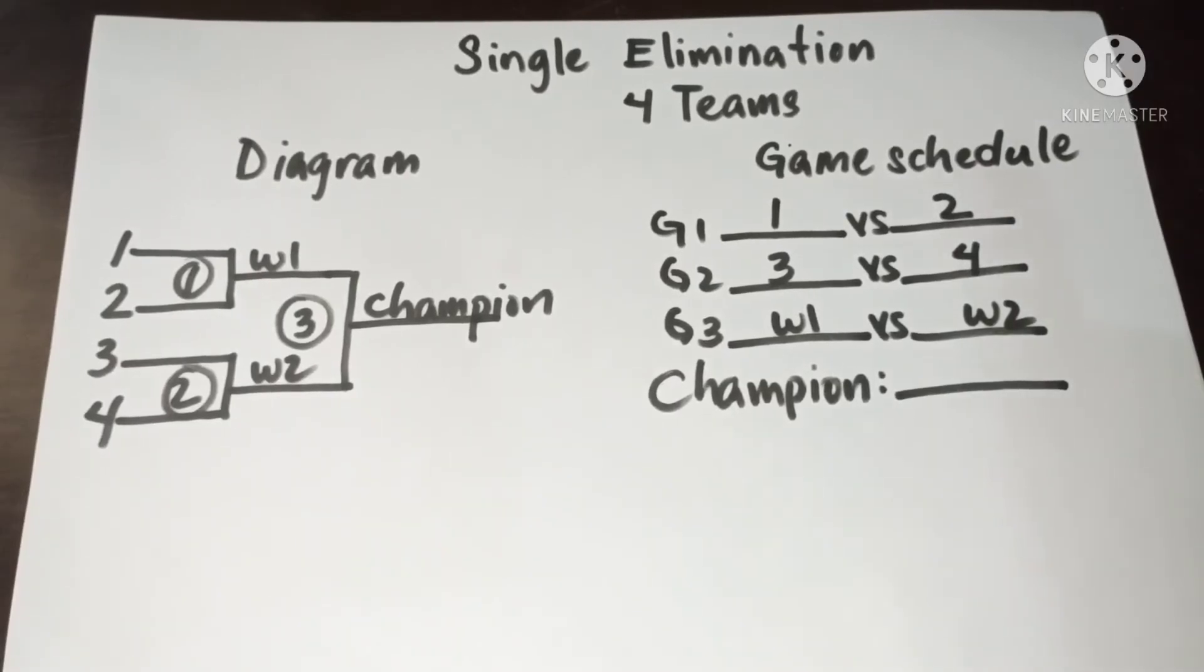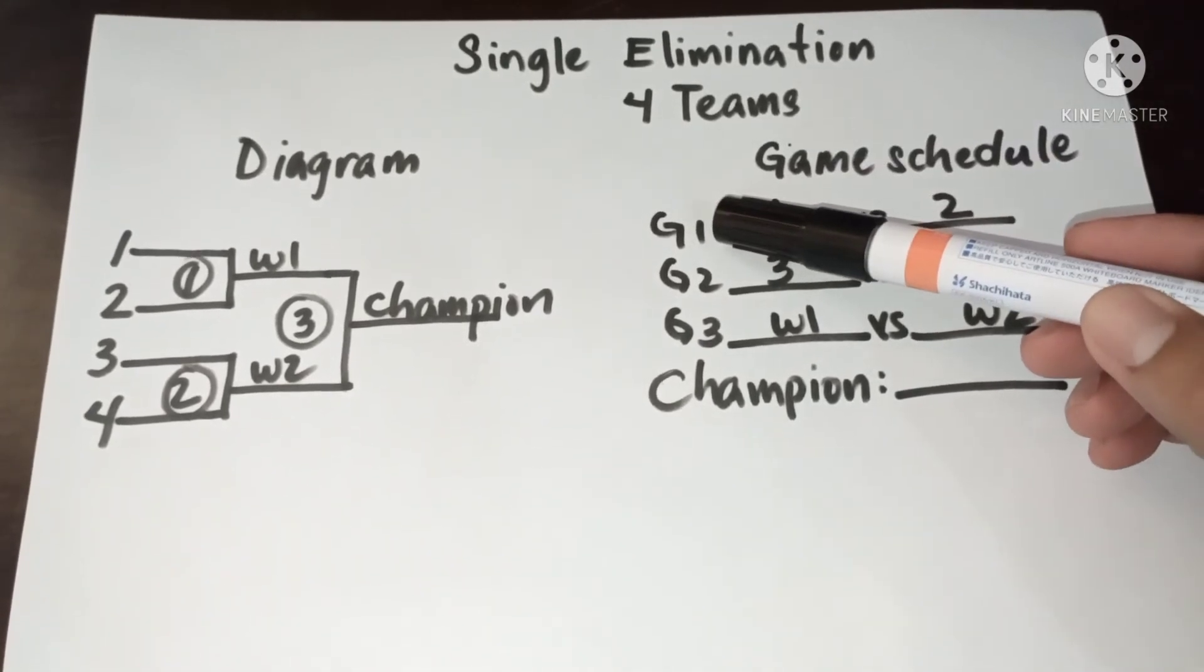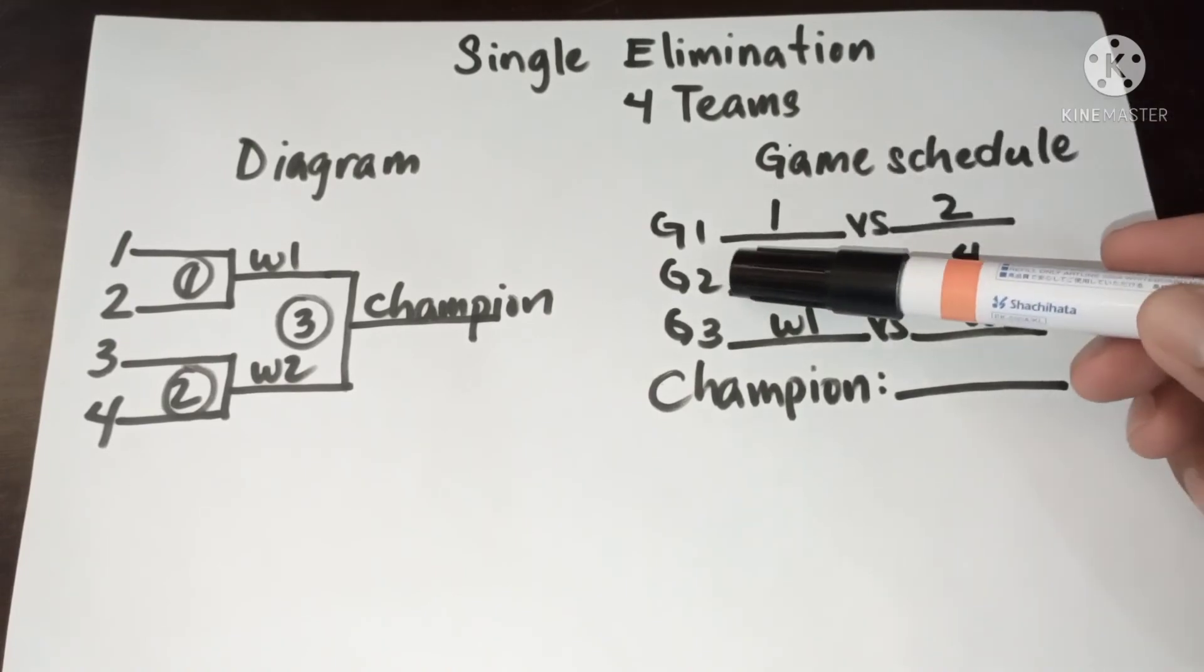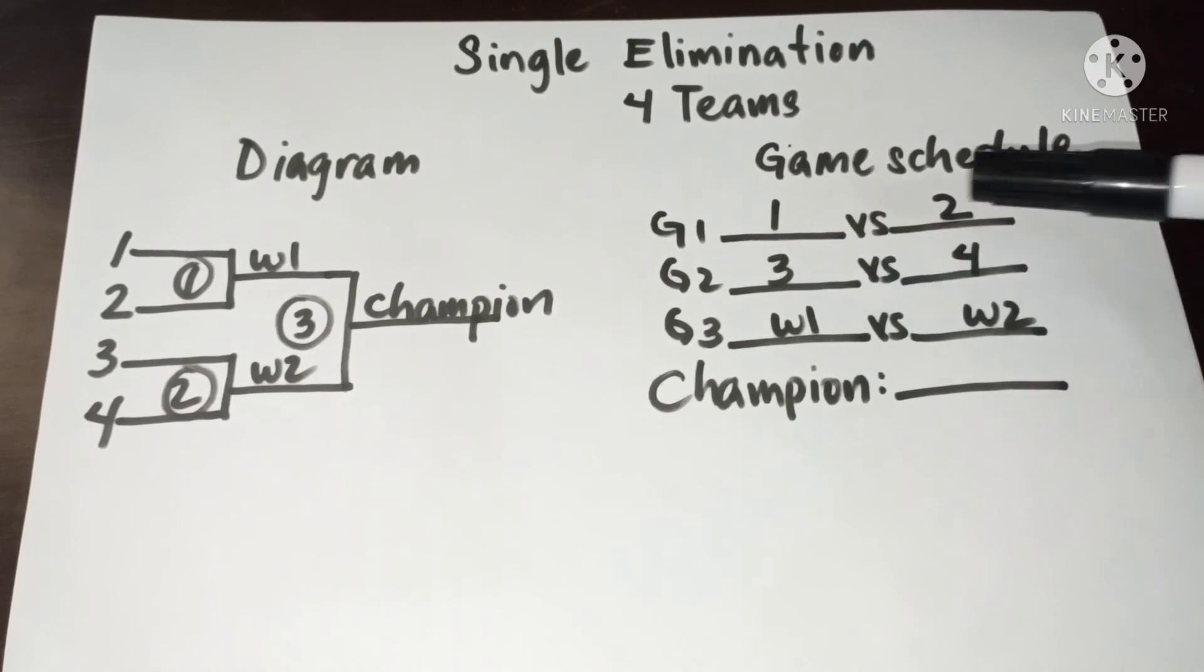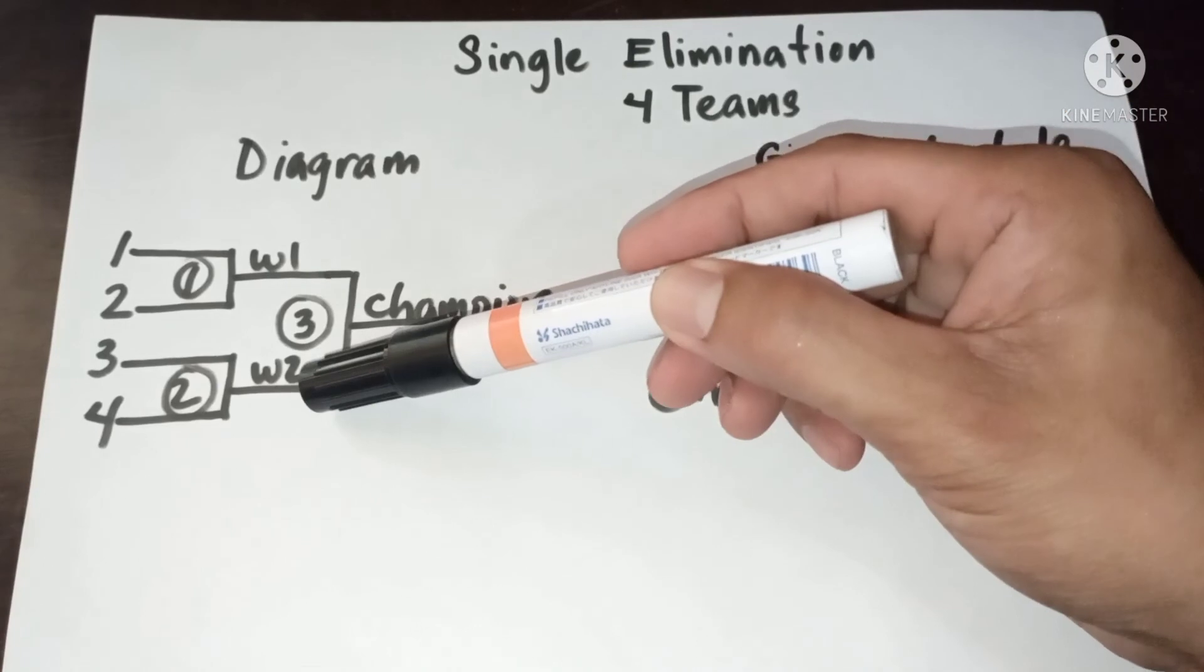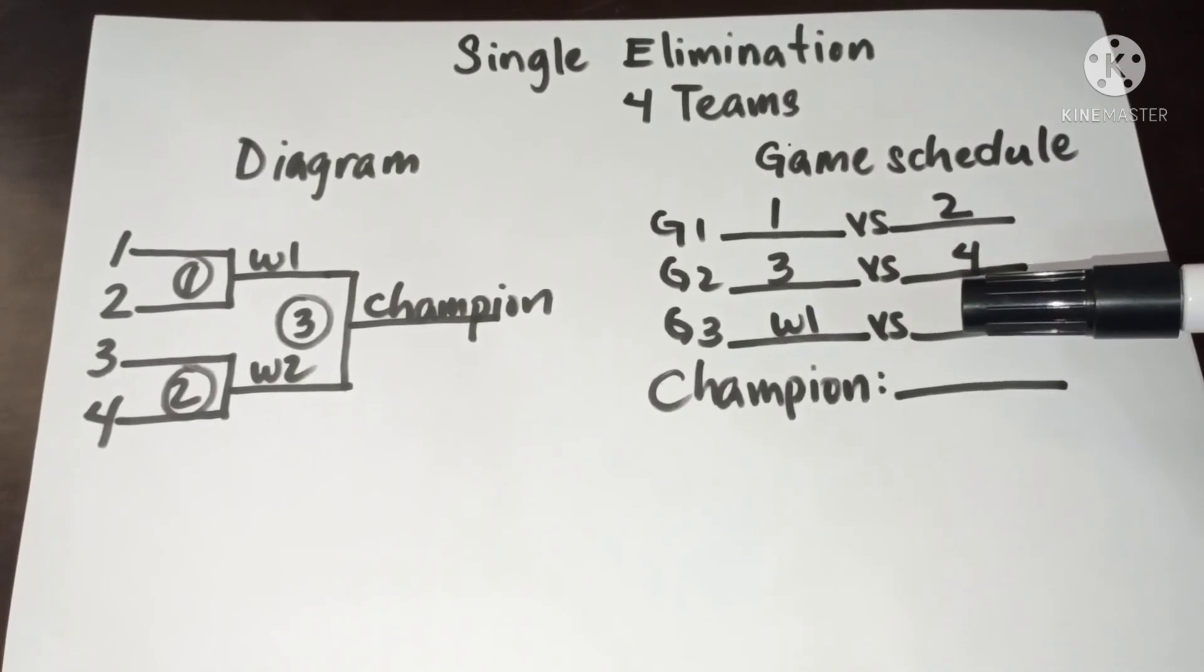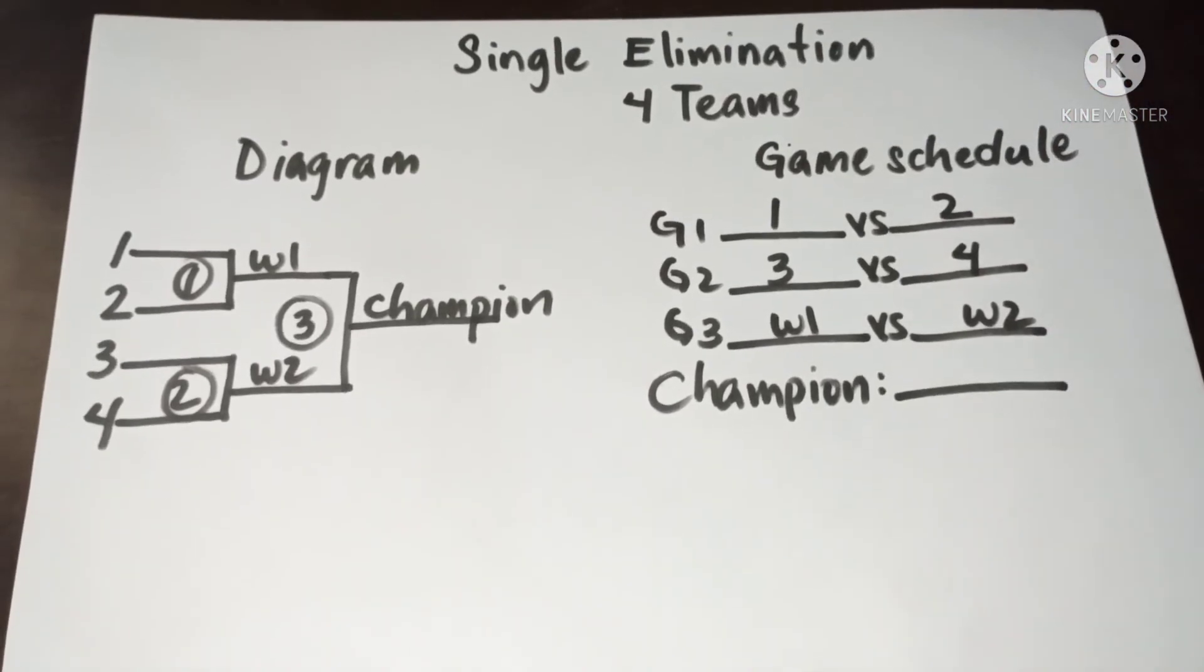Now let's interpret the diagram. In game one we have one versus two. In game two we have three versus four. And game three we have winner one versus winner two, then champion. So this is the diagram and game schedule for four teams.